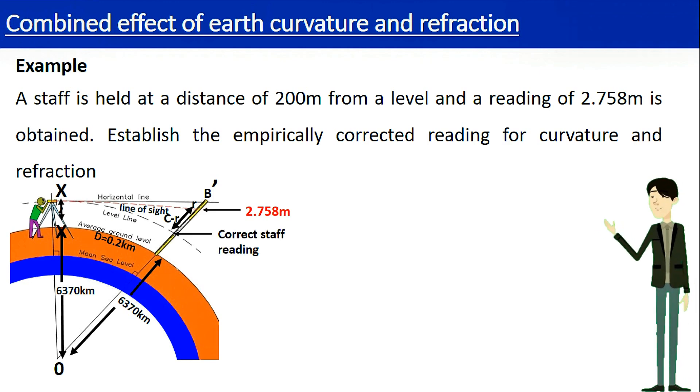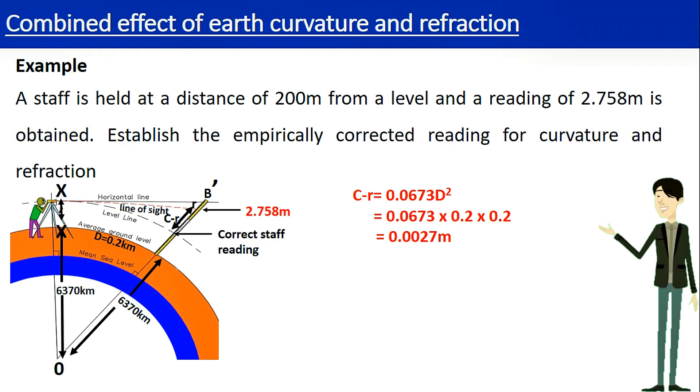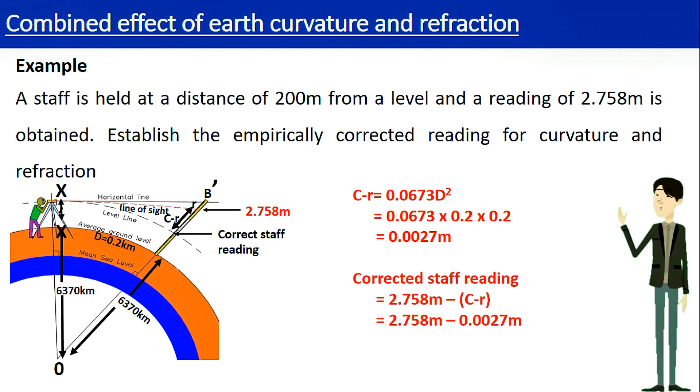Let's substitute distance between the instrument and the staff the D value of 200 meters in kilometers to the equation. C minus R is equal to 0.0673 into D squared. It is equal to 0.0673 into 0.2 into 0.2 meters. The answer is 0.0027 meters. Now we can easily obtain the correct staff reading. It is 2.758 meters minus 0.0027 meters. The answer is 2.755 meters.